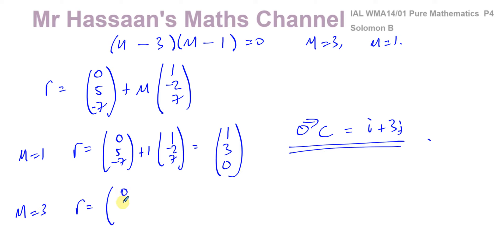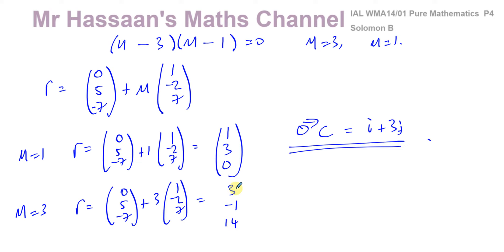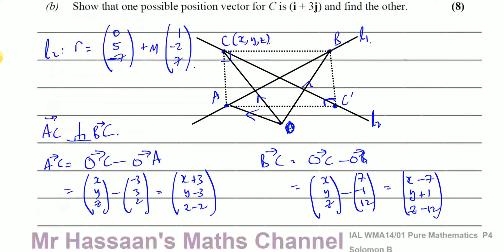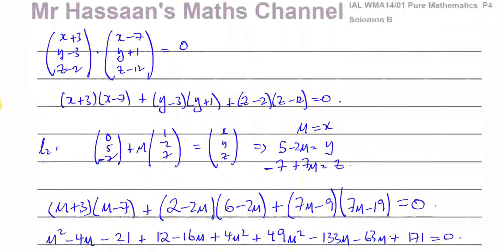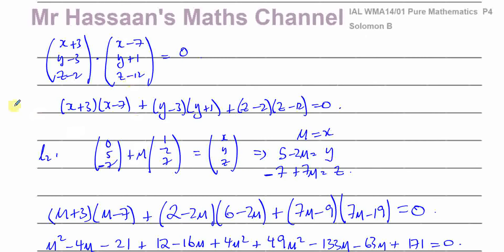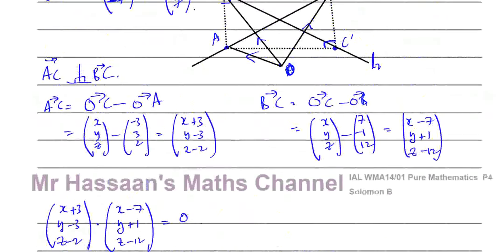When mu equals 3: R equals 0, 5, minus 7 plus 3 times 1, minus 2, 7, giving 0 plus 3 equals 3, 5 minus 6 equals minus 1, and minus 7 plus 21 equals 14. So the other possible position vector of C is 3I minus J plus 14K. That's the answer to part B — a long question but you have to be very careful not to make silly mistakes.